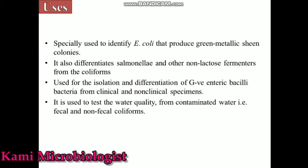Now let's talk about the uses of this media. This media is specially used for the isolation of E. coli bacteria, because on this media we can easily identify E. coli. E. coli produces a green metallic sheen colony, meaning it produces strong acid by fermenting lactose, which lowers the pH, giving us a green metallic sheen colony. Moreover, this media is also used for the isolation of Salmonella, which is a non-lactose-fermenting bacteria and also a coliform bacteria.